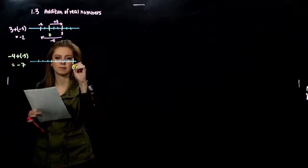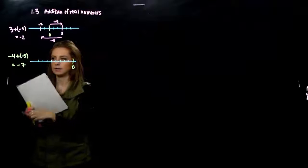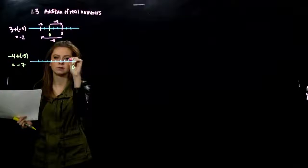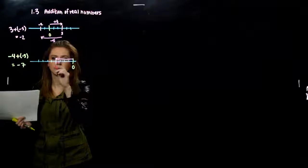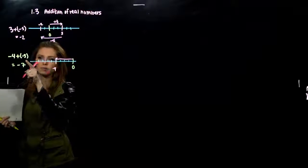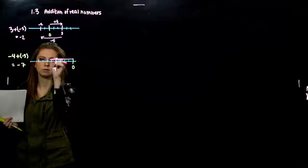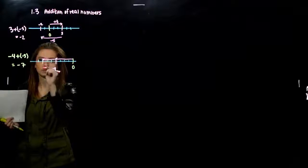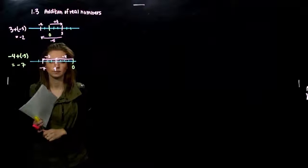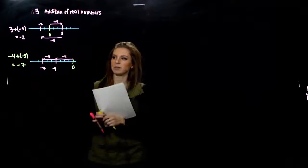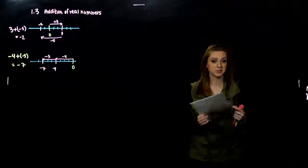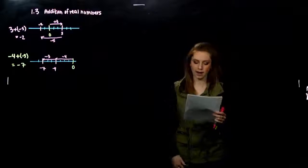So I'm going to let 0 be over here. The first part tells me I'm moving 4 units in the negative direction: 1, 2, 3, 4 — I hit right here. Then from there, I want to move an additional negative 3: 1, 2, 3. So where do we end up? Negative 7. So visually, that's what's happening on a number line — it tells us how to move in what direction, from 0 originally and then from whichever point we're at.